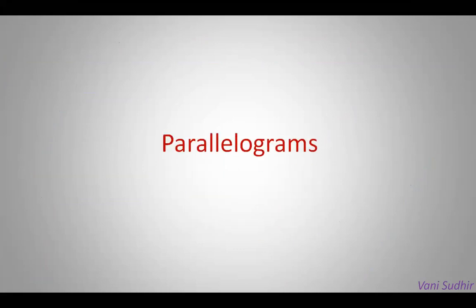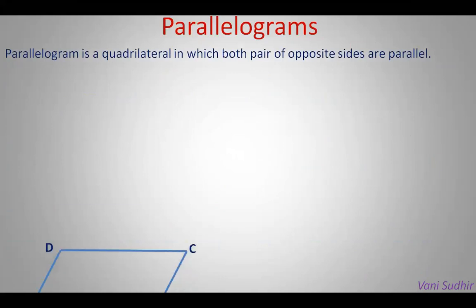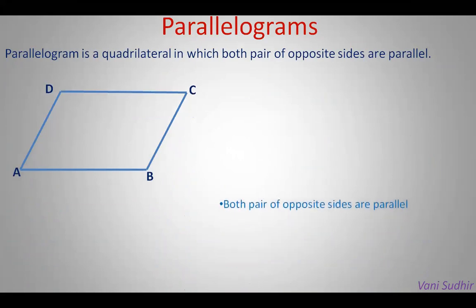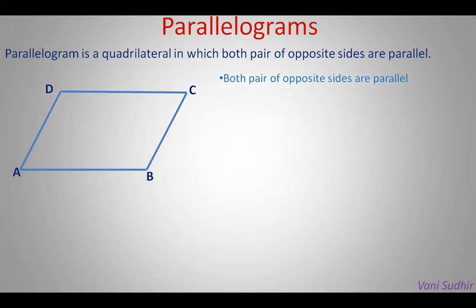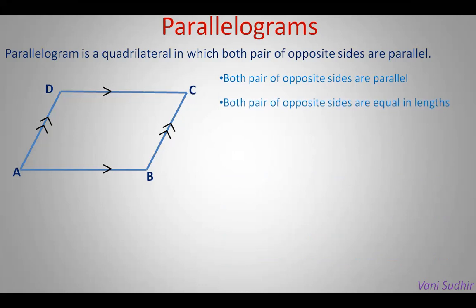Now one important definition: parallelogram. It is a quadrilateral in which both pairs of opposite sides are parallel. In parallelogram ABCD, DC is parallel to AB and AD is parallel to BC. It also satisfies other properties: both pairs of opposite sides are equal, meaning AB equals DC and AD equals BC.